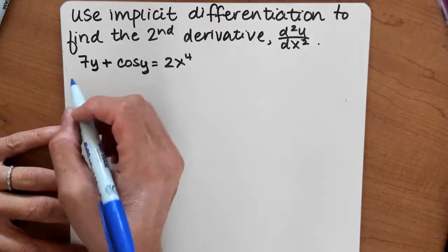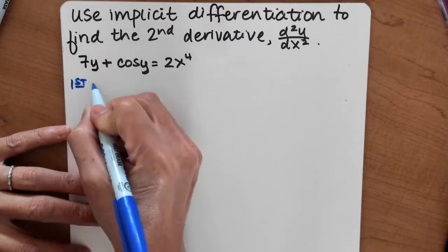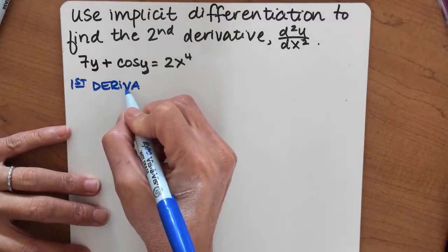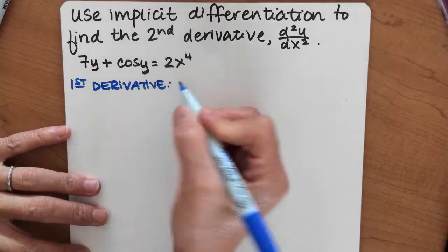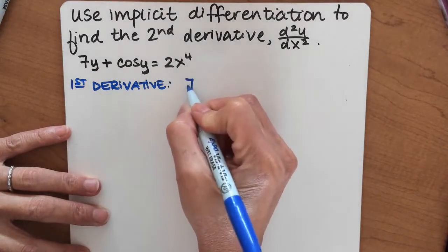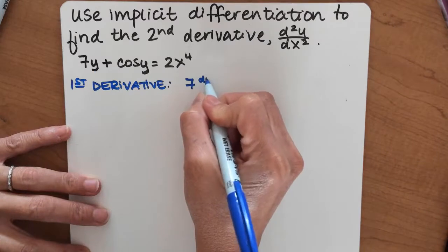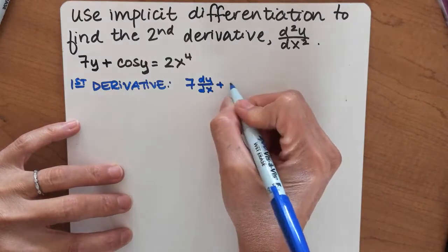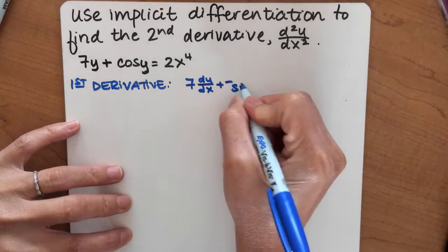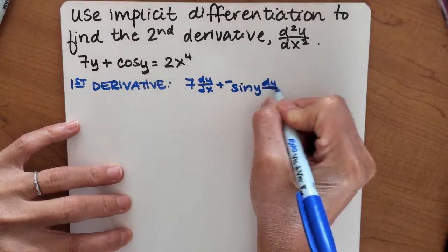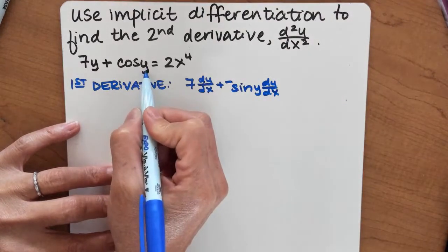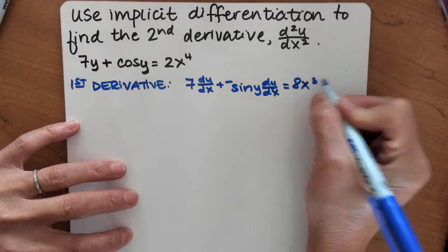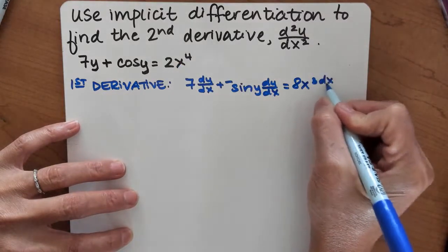Before I can find the second derivative, I first need to find the first derivative. So I am taking the derivative with respect to x. The derivative of 7y is 7 times dy/dx, plus the derivative of cosine y is negative sine y times dy/dx. That's going to equal 8x cubed times dx/dx.